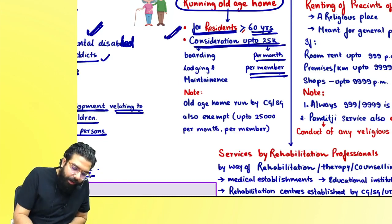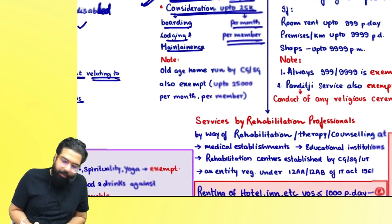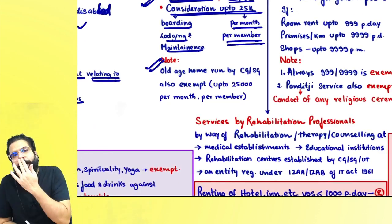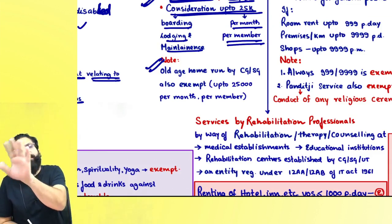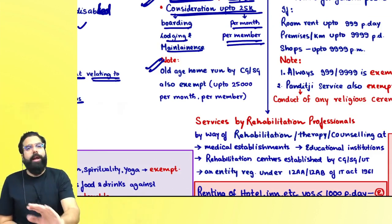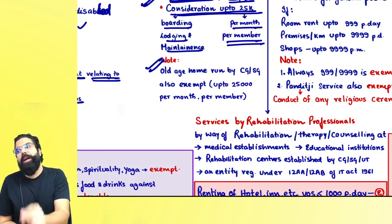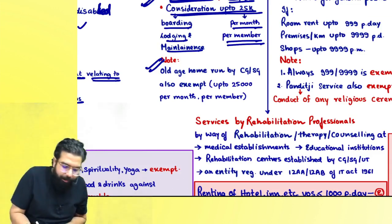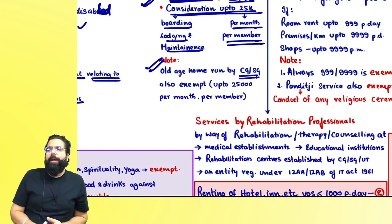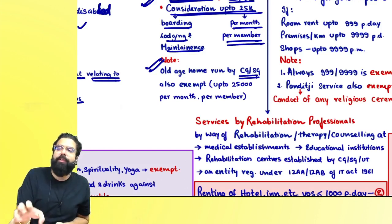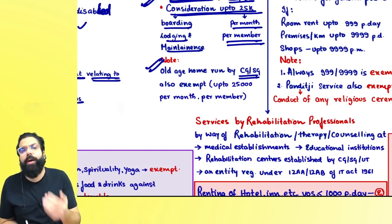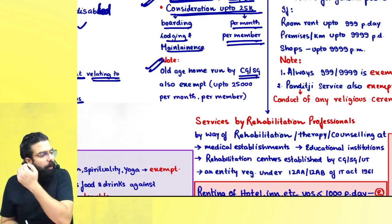For father and mother together, 50,000 is the exemption threshold (25,000 per person). The old age home charges for boarding, lodging, and maintenance. If the old age home is run by a charitable institution registered under 12AA or AB, the exemption is there. If it is run by the central government or state government and charging up to 25,000 per month per member, the exemption will apply to the government-run old age home also.